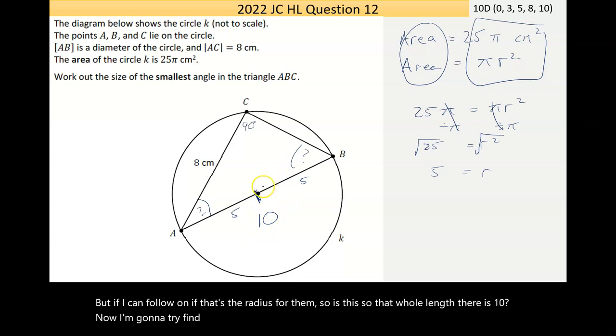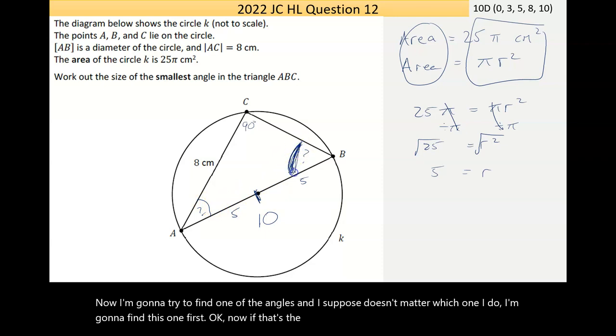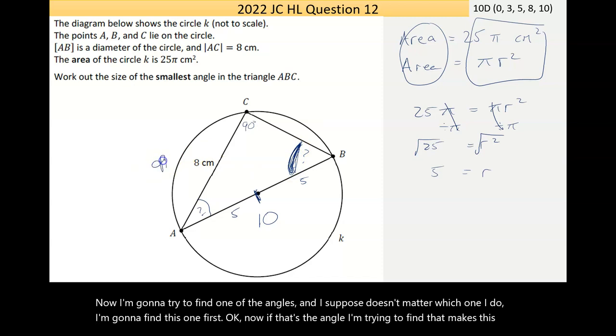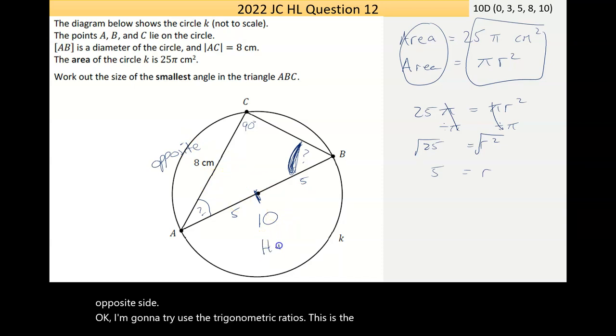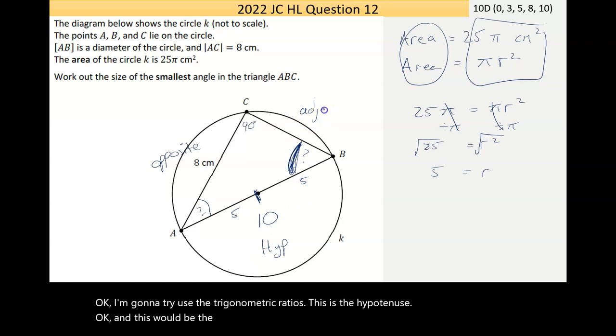Now, I'm going to try to find one of the angles. And I suppose it doesn't matter which one I do. I'm going to find this one first. Now, if that's the angle I'm trying to find, that makes this the opposite side. I'm going to try to use the trigonometric ratios. This is the hypotenuse. And this would be the adjacent.